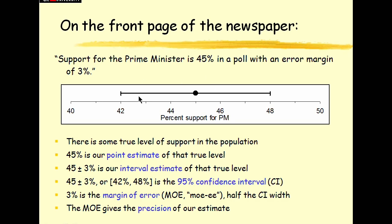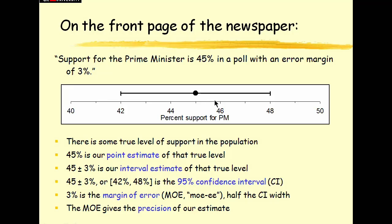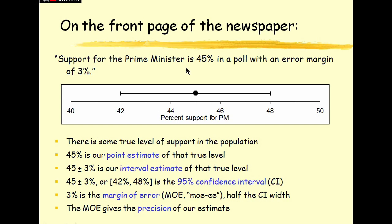And if we did the experiment again, most likely, not guaranteed, but most likely we get a result within this confidence interval. We might get 46. We might get 42 and a half. But we pretty definitely, almost certainly, would not get 40 or not get 50. Most likely we'd get some value round about 44, 45, 46 in the middle of the confidence interval.